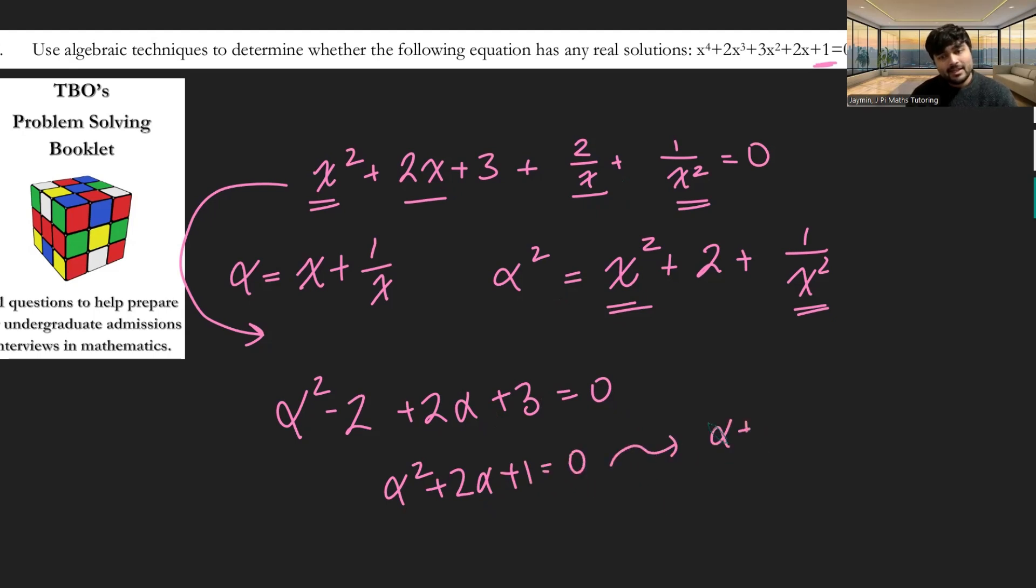And so this tells us that alpha plus 1 squared is 0, and so alpha equals minus 1. This is really cool. What have we just demonstrated? We've demonstrated that if there are any solutions to this equation, x, then firstly there won't be 0. And then by defining alpha to be x plus 1 over x, we get that alpha has to be minus 1.